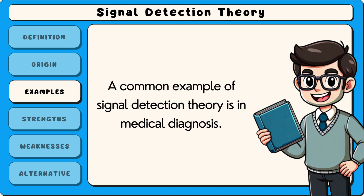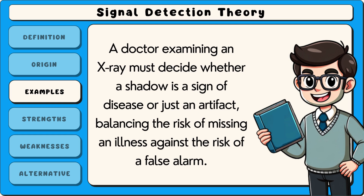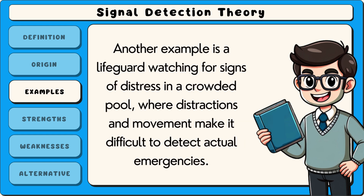A common example of signal detection theory is in medical diagnosis. A doctor examining an X-ray must decide whether a shadow is a sign of disease or just an artefact, balancing the risk of missing an illness against the risk of a false alarm. Another example is a lifeguard watching for signs of distress in a crowded pool, where distractions and movements make it difficult to detect actual emergencies.